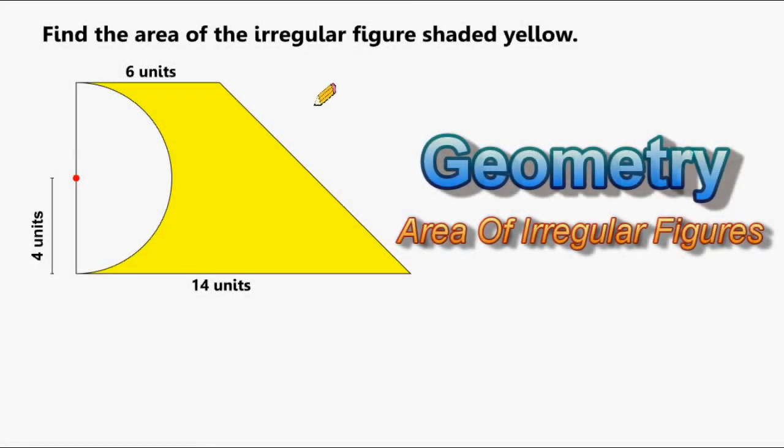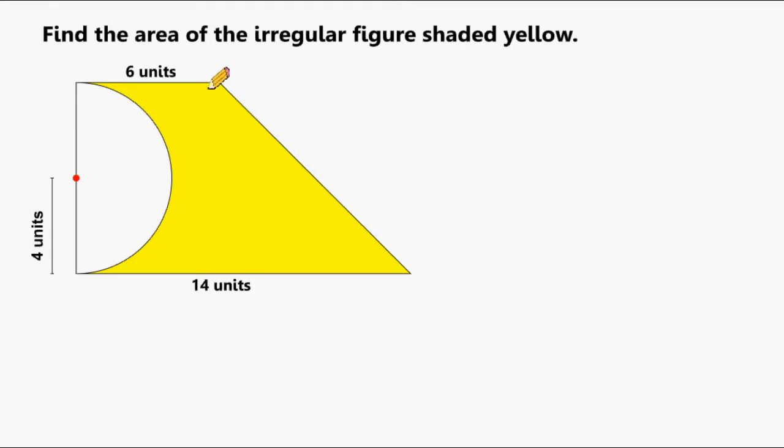All right, our job for this problem is to determine what is the area of the portion of this figure shaded yellow. Now the entire figure here is a trapezoid, and only part of this trapezoid is shaded yellow.